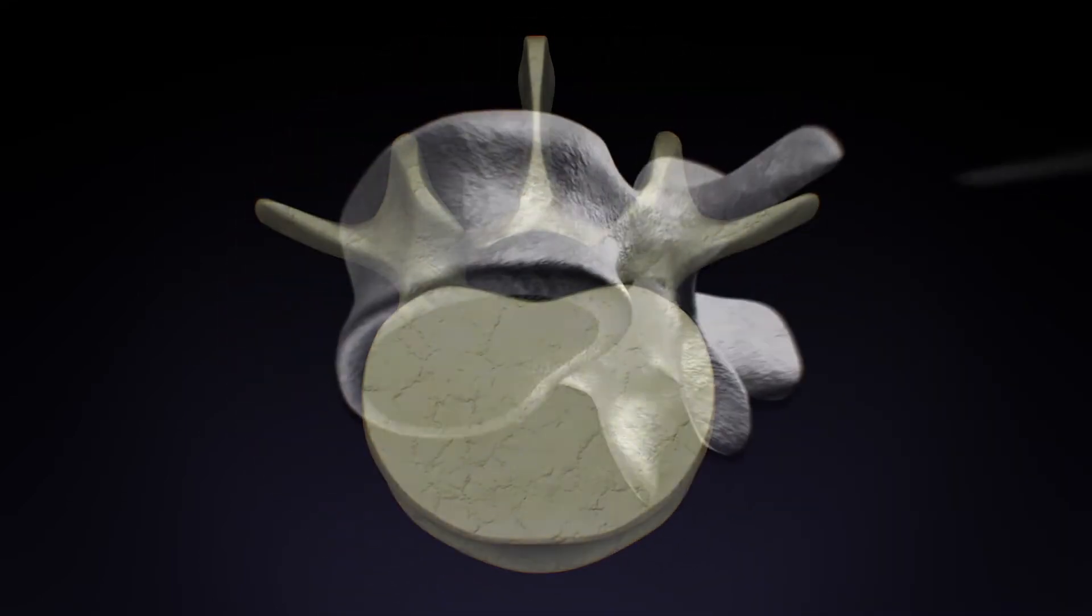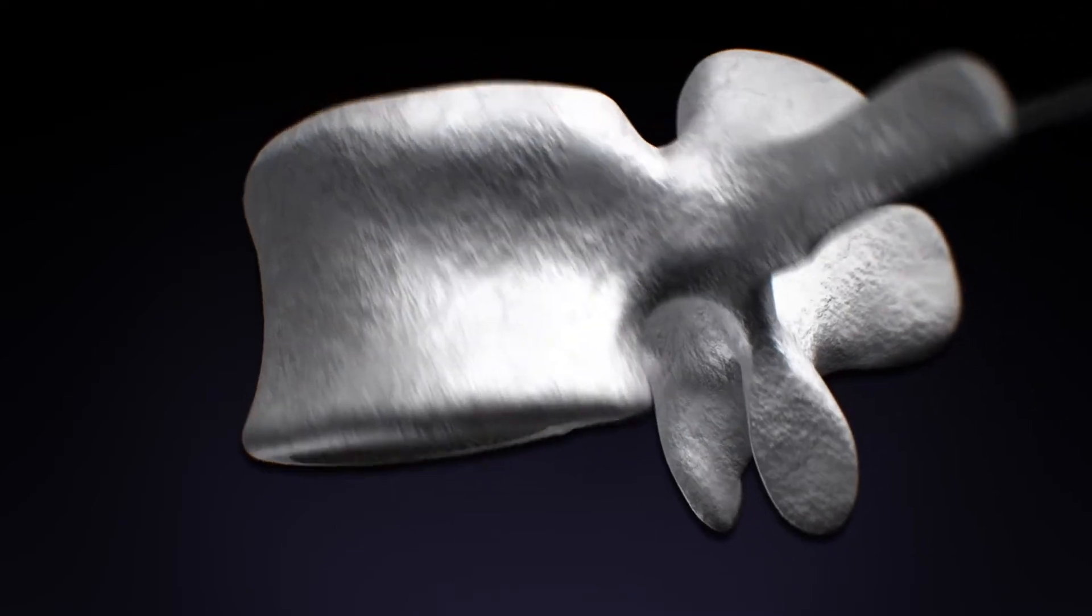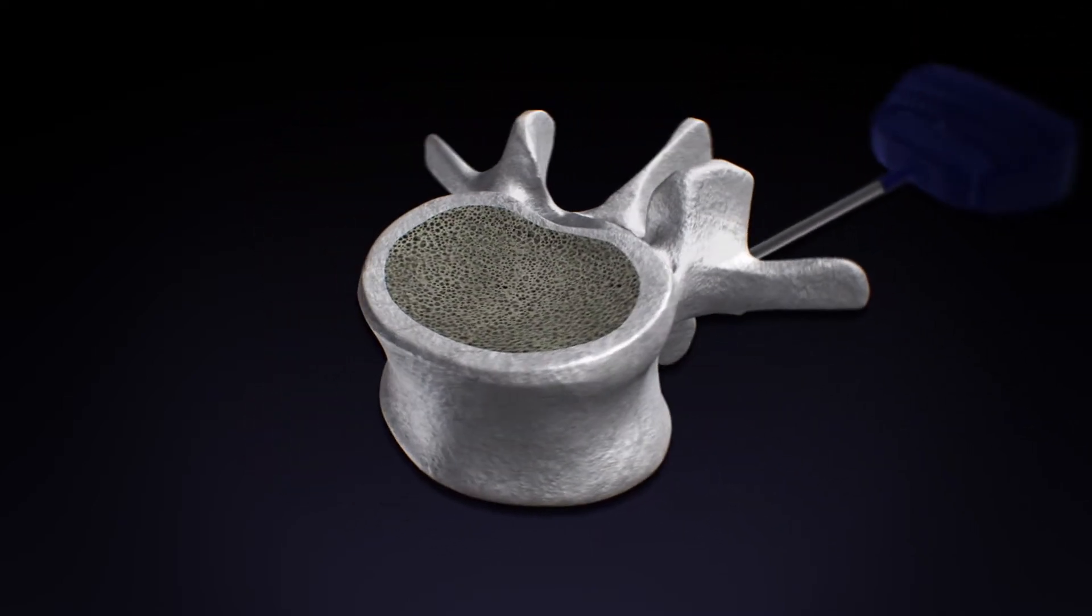Vertebral augmentation with Stability MX begins with placement of the stability introducer into the posterior one-third of the vertebral body.